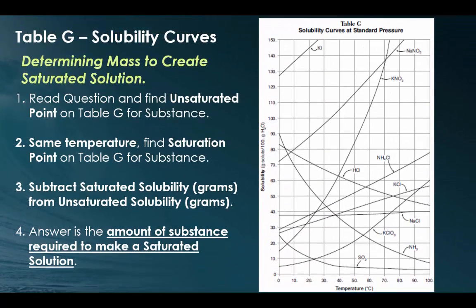So now we're going to be using table G again to determine the mass to create a saturated solution from an unsaturated solution. So all you have to do is find the unsaturated point that's given to you in the question, then at the exact same temperature from the question, find the saturation point for that substance on table G. That means you have to just go vertically up the same x-axis. When you figure out the amount of grams from the saturated solution, you would then subtract them from the unsaturated solution, and that difference tells you the amount of substance required to make a saturated solution.